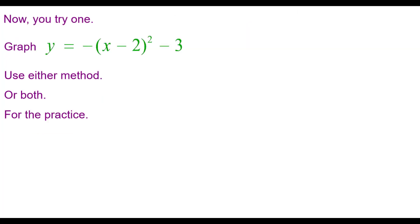Now you try one. Graph y equals the opposite of the quantity x minus 2 squared minus 3. Use either method or both for the practice. Press pause to do this and then resume when you're finished to check your answer.